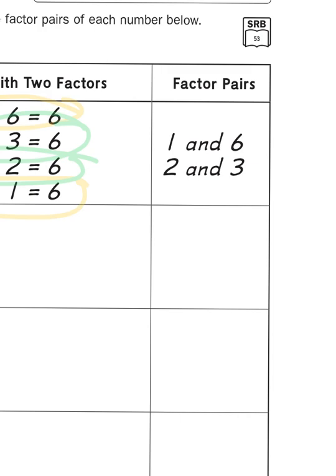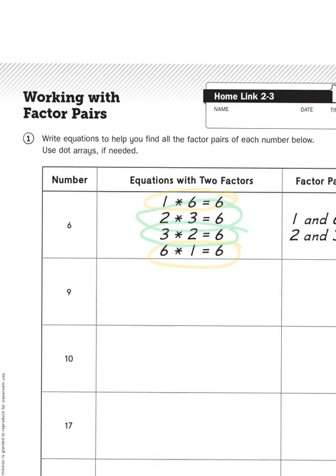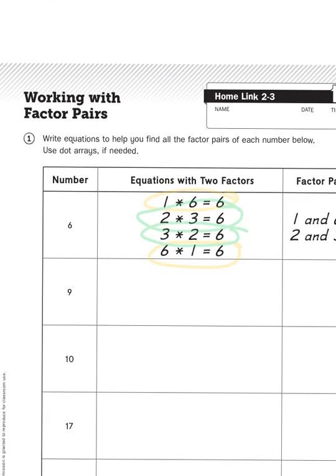So these four number sentences, these four equations, show us that there are two pairs of factors, one and six, and two and three. You don't have to represent the same numbers twice when you're revealing factor pairs.